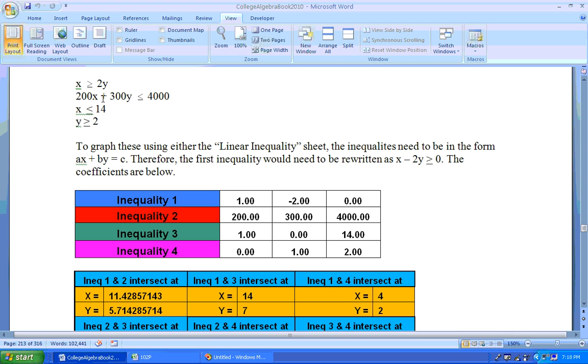Second inequality coefficients are 200, 300, 4,000. The next inequalities coefficients are 1, 0, 14 because there's no Y, and this would be 0, 1, 2 because there's no X.